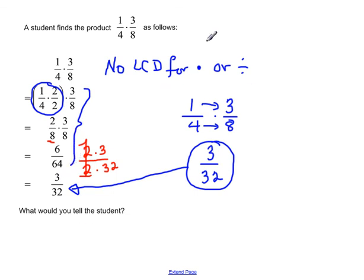So what we could tell the student is we could remind them, no LCD is needed for multiplying or for dividing fractions. Just multiply straight across. Be looking for ways to simplify by looking for those common factors. Before you do the multiplying, you'll come up with your final answer a whole lot easier than doing all of these extra steps that really aren't necessary at all.